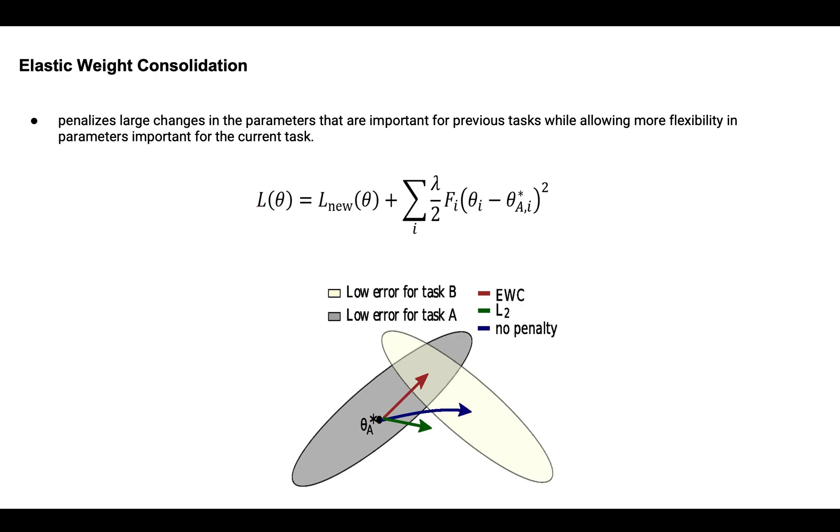However, the planes are not parallel as we can see here. They are kind of tilted and intersecting. This means that the lowest point on plane A is not necessarily the lowest point on plane B. If the model moves from plane A to plane B, it will increase its loss on the old task and vice versa. This is the problem of catastrophic forgetting.